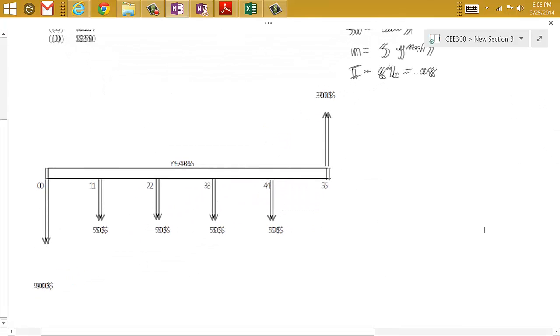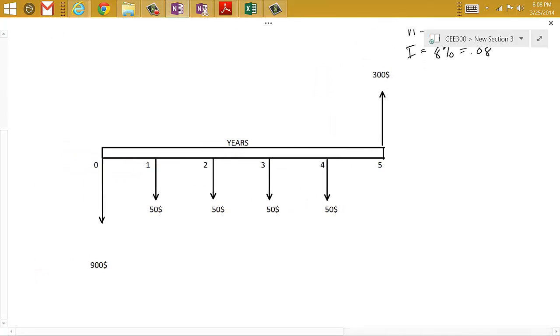But like I said, in terms of its ability to illustrate what's going on, you can see that at year zero when we purchase the printer, we have $900 leaving our cash flow. And then each year after that, at the end of year zero, $50, all the way up until we get to year five where we sell it for $300.